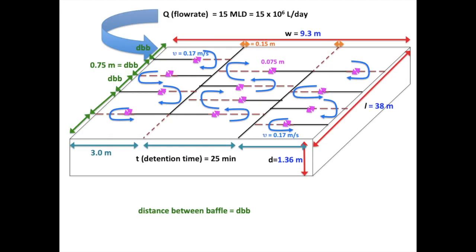With that, we successfully have obtained the dimension of the hydraulic flocculation tank whereby the width of the tank is 9.3 meters, the depth of the tank is 1.36 meters, and the length is 38 meters. Thank you very much for your patience and Assalamualaikum.